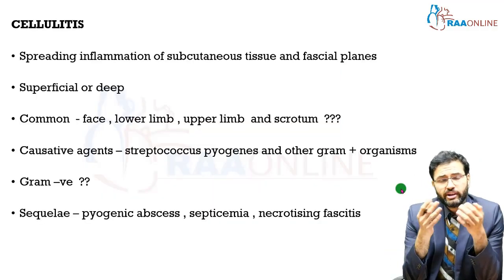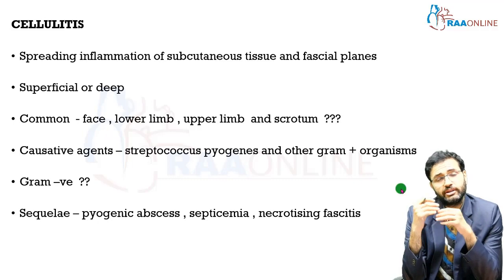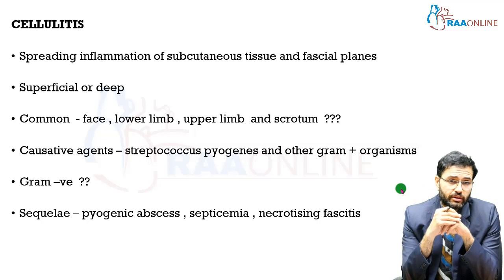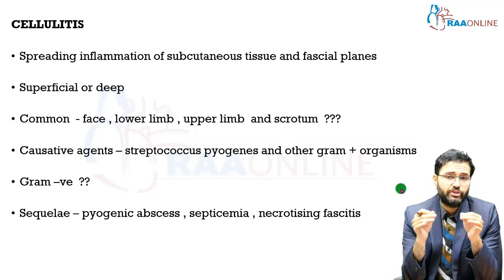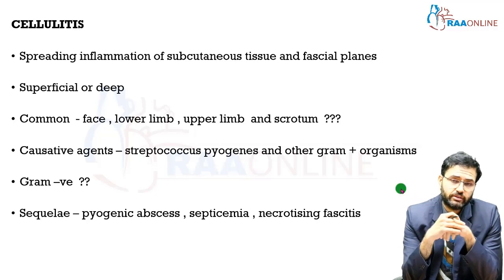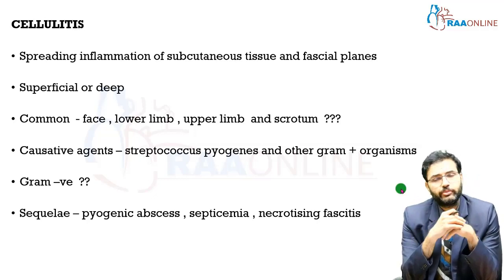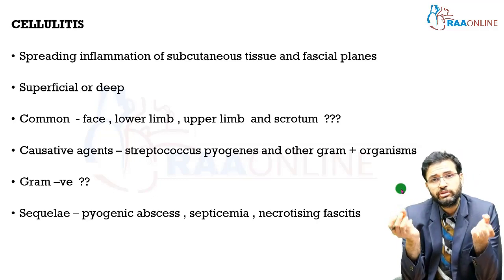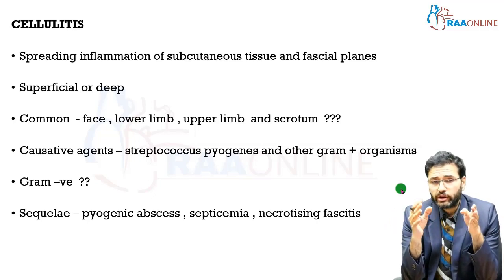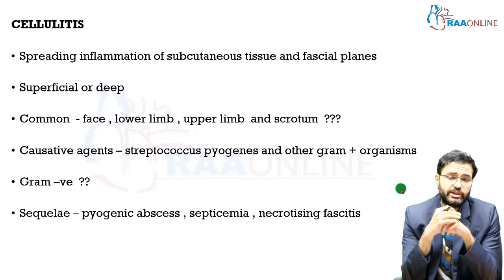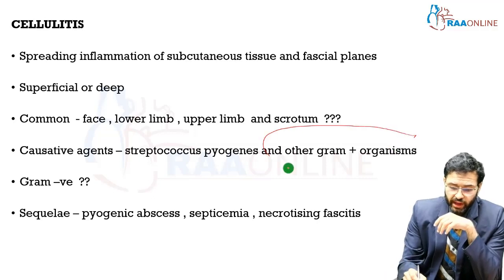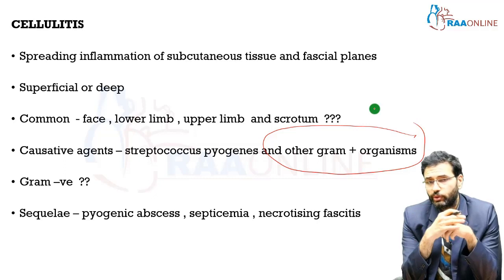The first surgically important infection we will discuss is cellulitis. Cellulitis is a spreading inflammation of subcutaneous tissue and fascial planes. It can be superficial or deep and is common in the face, lower limb, upper limb, and the scrotum, which has a lot of loose subcutaneous tissue. The most common organisms causing cellulitis are Streptococcus pyogenes and other gram-positive organisms.